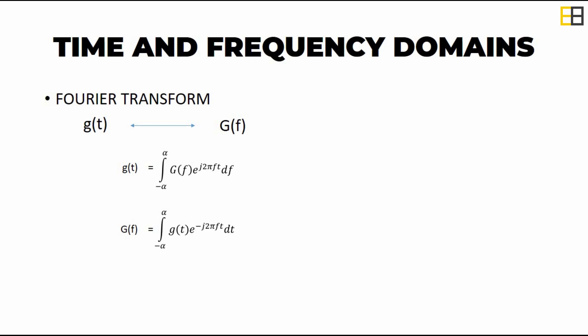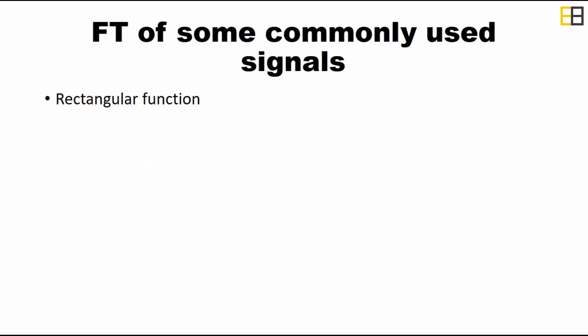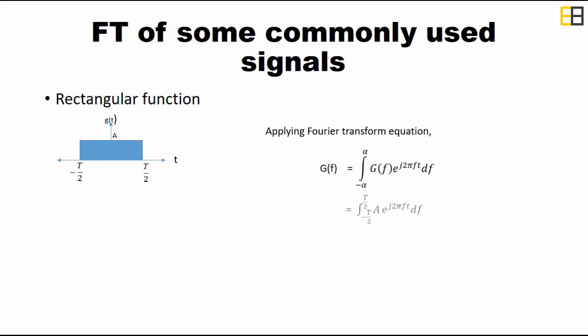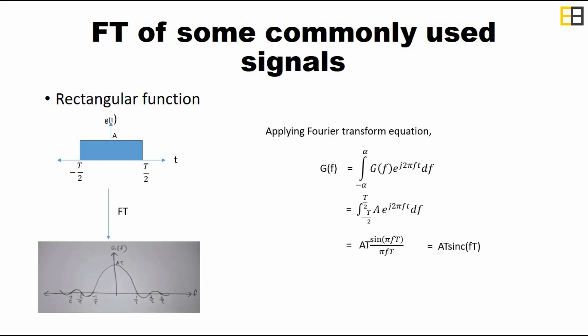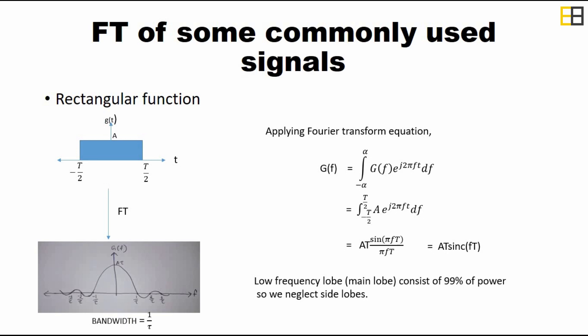Now we can learn about the Fourier transform of some common signals used in communication. First, the rectangular function: consider a rectangular function of amplitude A and width T. Applying the Fourier transform will give a sinc function. Since the main lobe consists of 99% of the power, we neglect the side lobes and get the bandwidth as 1/T.